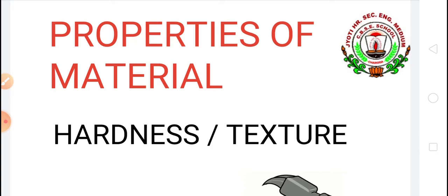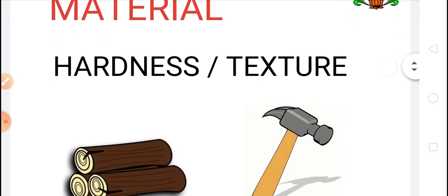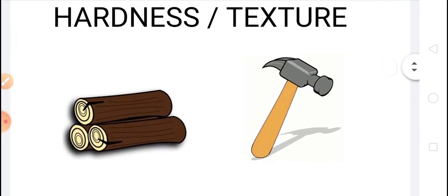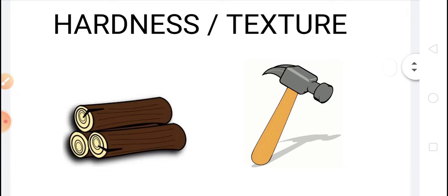Today we are going to learn about some other properties of materials such as hardness, texture, states of matter, solubility, density, transparency, and conductivity of heat. So let's start with the property hardness.